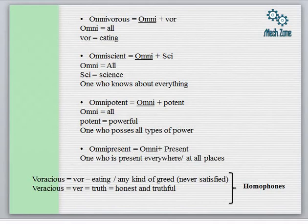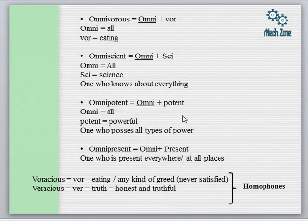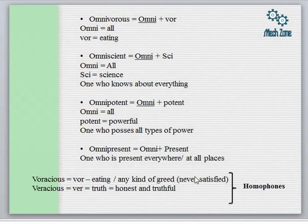From these lectures we are also learning about one-word substitution — where an entire sentence is replaced by one word, so the answer is omniscient. Next is 'omnipotent' — omni means all and 'potent' means potential or power, so one who possesses all types of power. This is generally used for God. The next word is 'omnipresent' — omni means all and present means to have a presence, so one who is present everywhere. This is also used for God.